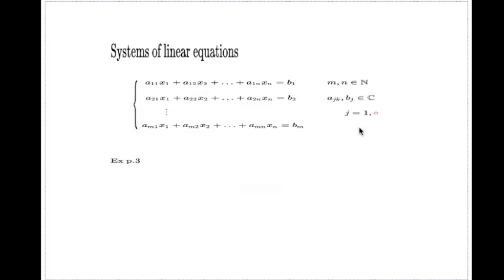So the J index in your A takes the values from 1 to M, that's the row index or the equation index. The K index, that's the variable index, it goes from 1 to N and unknown of course also in general you look for the unknowns in complex numbers and that's the unknown.